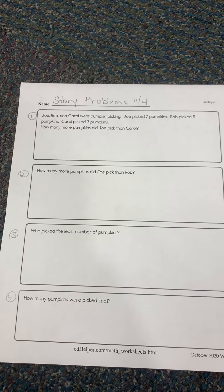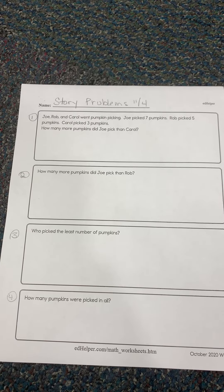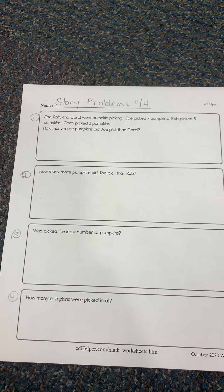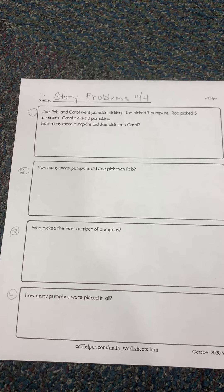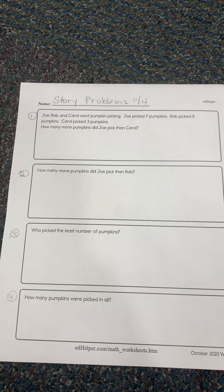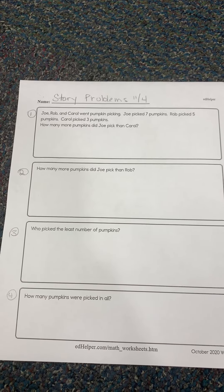Number two: how many more pumpkins did Joe pick than Rob? The only two numbers you're going to need are Joe's number and Rob's number. This is a subtraction problem.